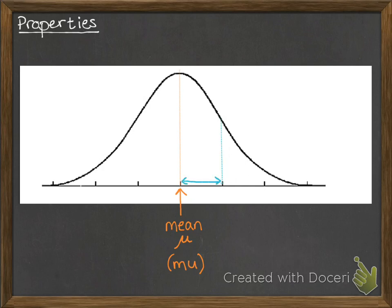Now, this distance here, that's one standard deviation away from the mean. Standard deviation is a measure of spread, and it's given the Greek letter sigma.